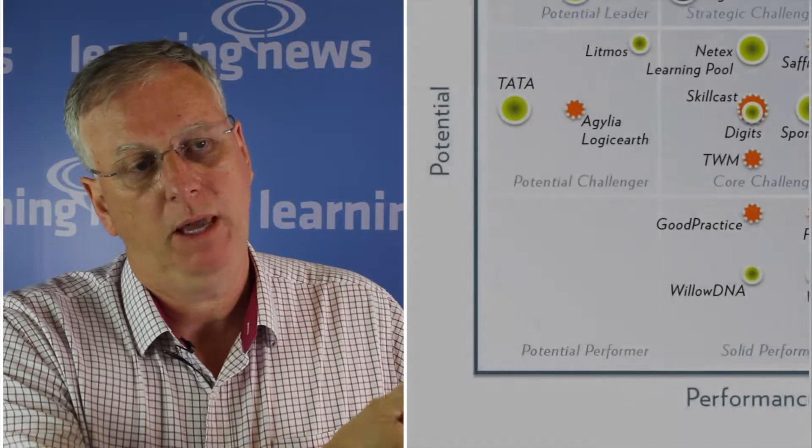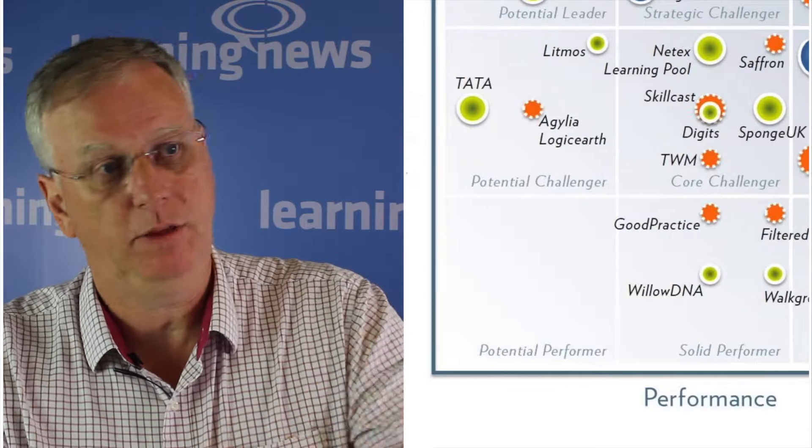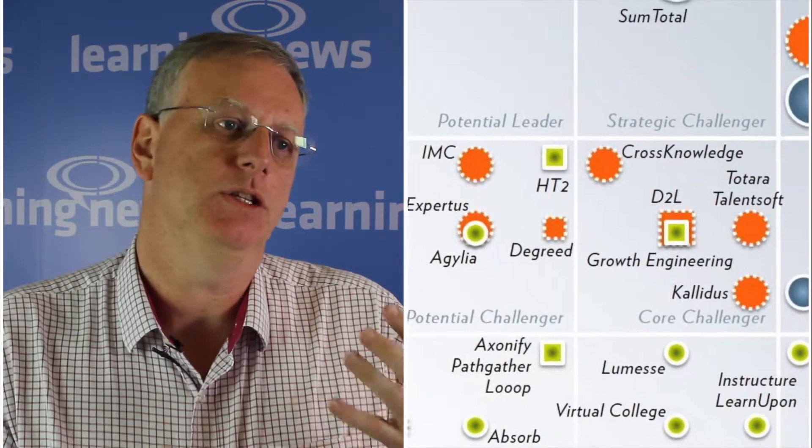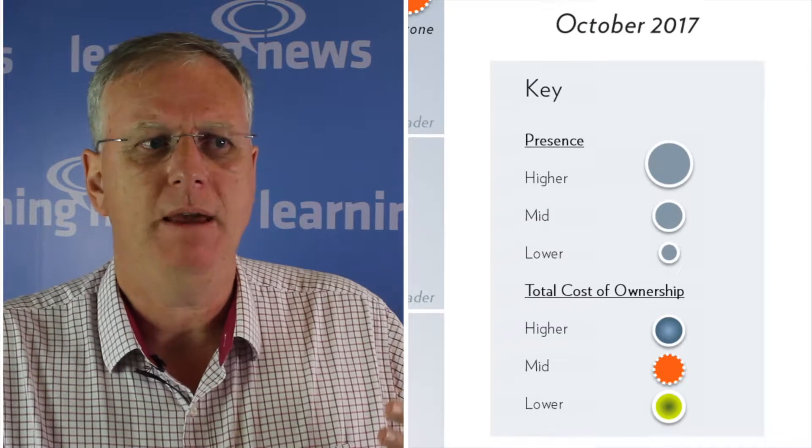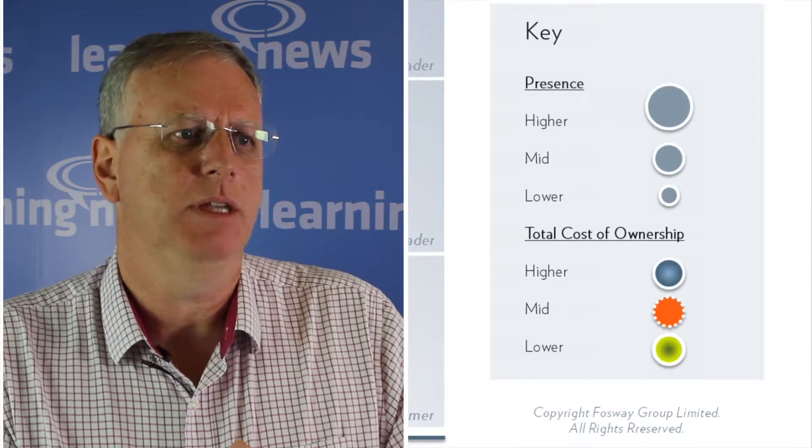Performance is around customer market awareness through to buying behavior, through to delivery and advocacy. Potential is about their ability to serve the needs of that customer demographic. You see organizations banded there — whilst all vendors tend to see themselves as enterprise-class suppliers, in reality very few really are. They would struggle to deal with real multinational organizations.